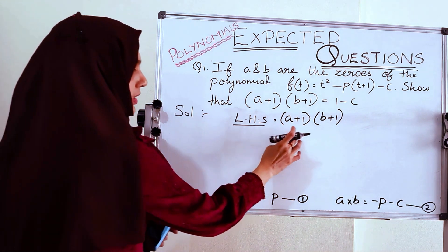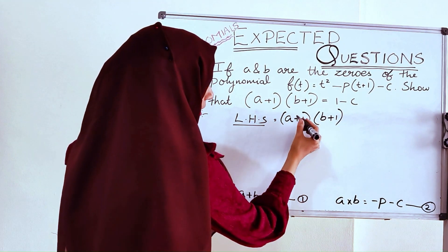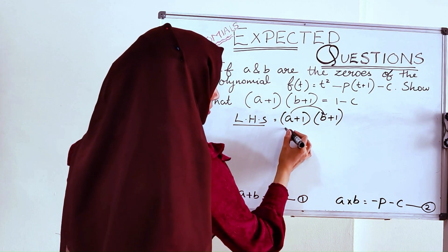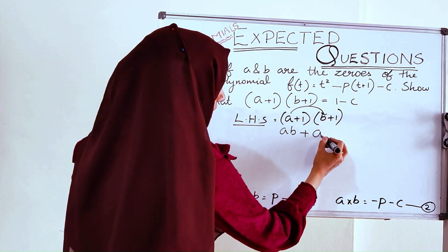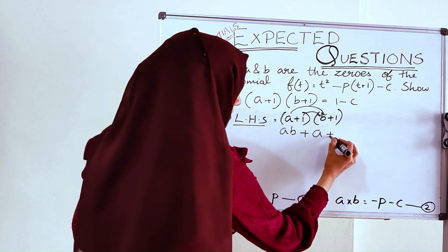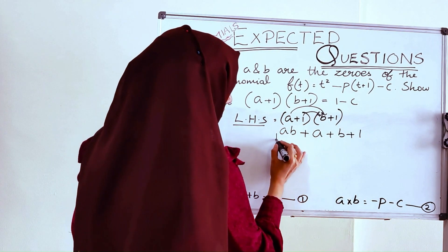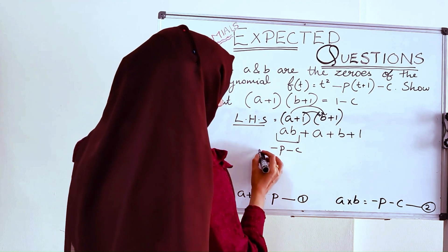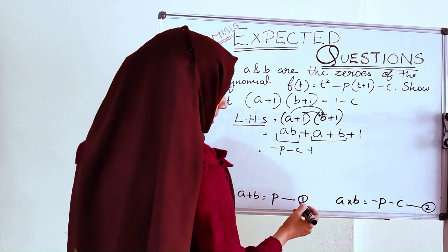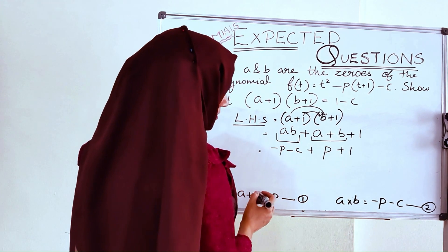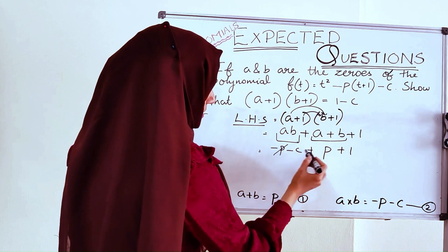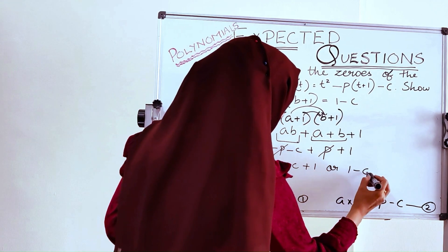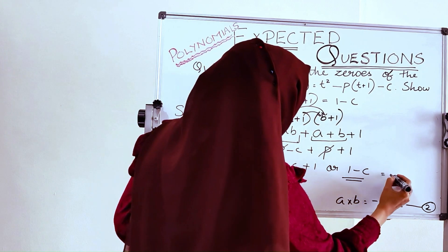Now let us substitute into the LHS. Our LHS is (a + 1)(b + 1). Open the bracket: distribute a to both b and 1, giving ab + a. Then 1 into b is b, plus 1. We know ab from equation 2: ab = −p − c. And a + b from equation 1 is p. So here, −p and +p will cancel. We get −c + 1, or 1 − c.